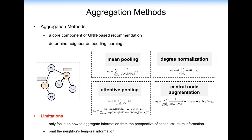However, previous works largely focus on how to aggregate information from the perspective of spatial structure information, but ignore temporal information about neighbor embeddings. Actually, temporal information is a vital signal that contributes significantly to aggregation in GNN-based recommendations, but is not encoded in neighbor embedding learning.